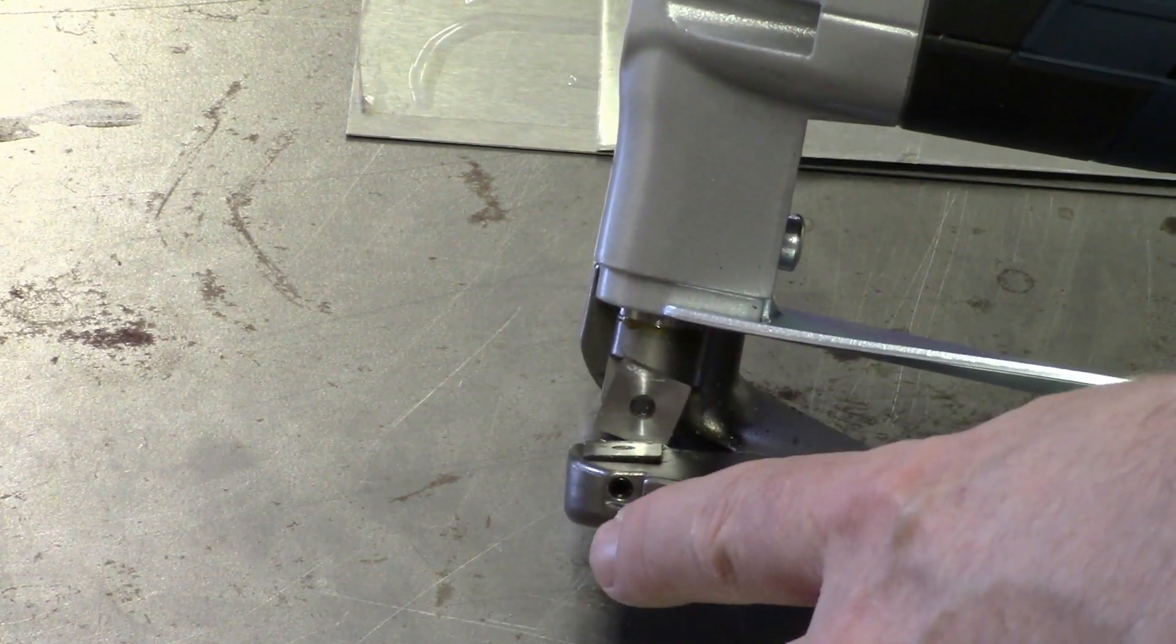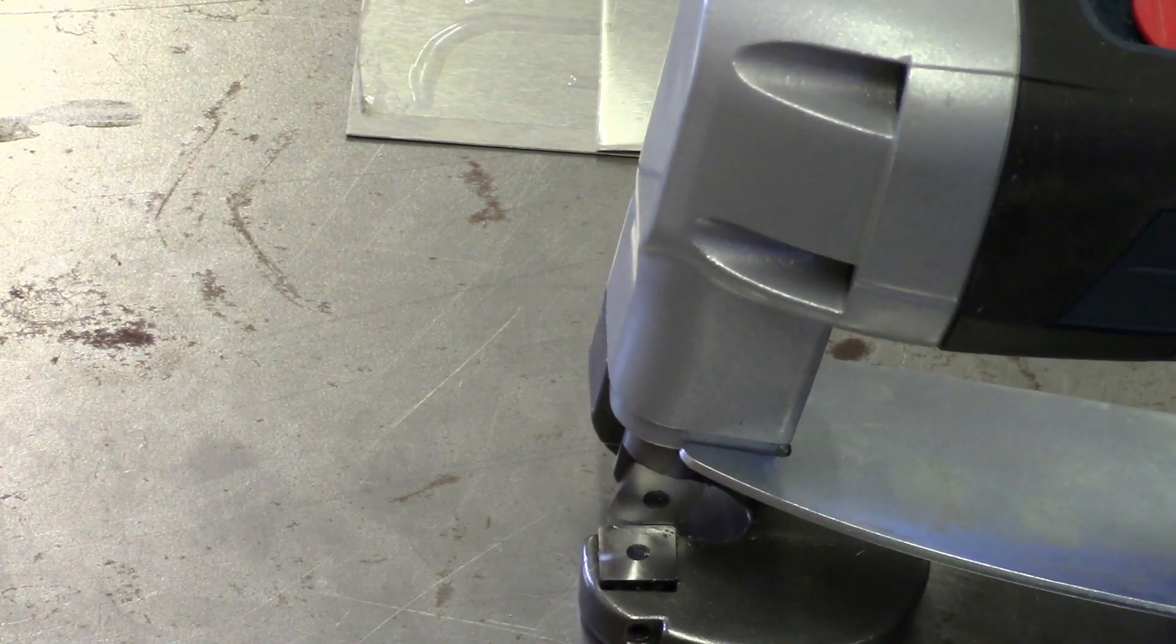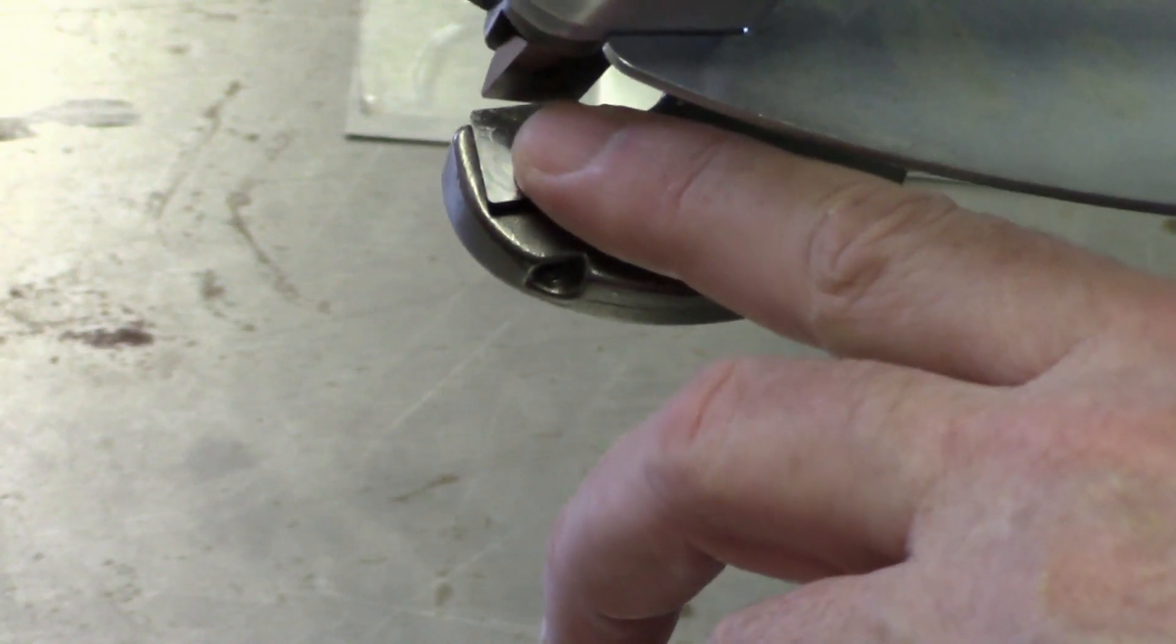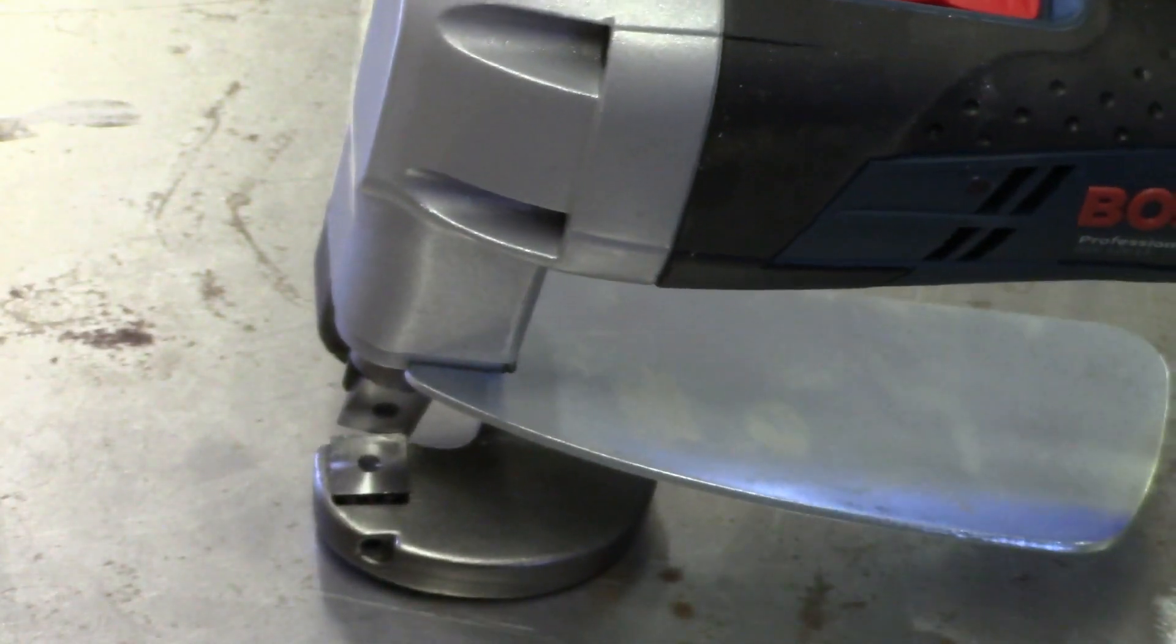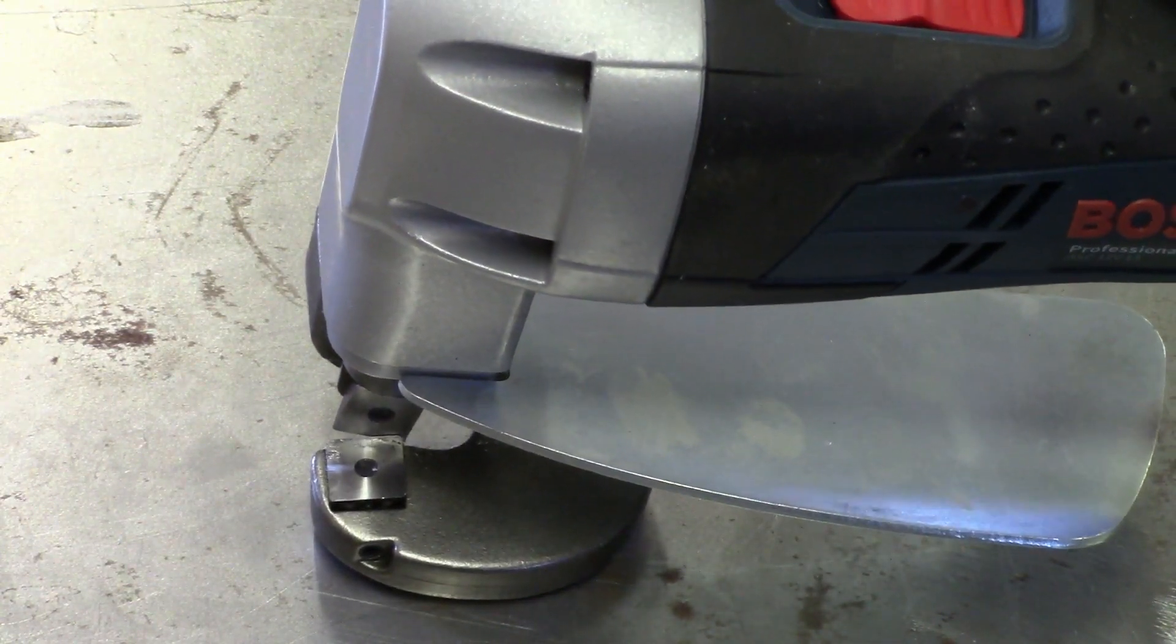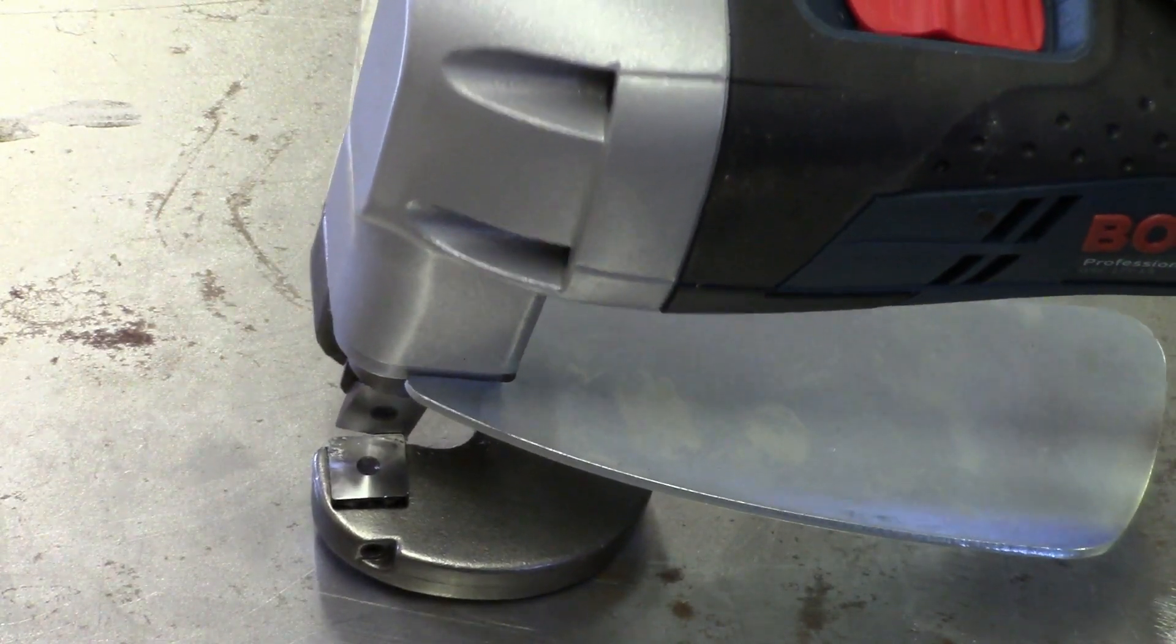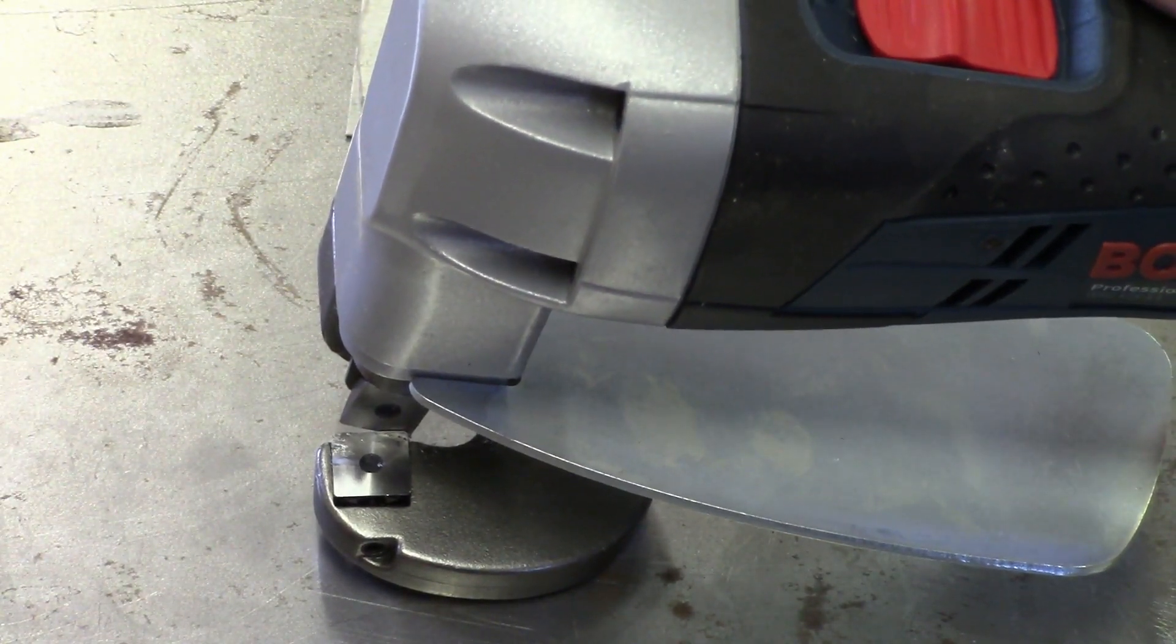You also have an adjustment screw here for adjusting the gap between the two blades. You would want to do that kind of adjustment when you get to thicker pieces of metal. You actually want to widen that gap a little bit. Most of the stuff I'm going to be doing is probably anywhere from 016 to 040, and the tests I've done so far, it's worked just fine with that.